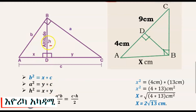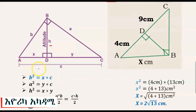The altitude H squared equals x times y. We also use the area of triangle ABC: one-half base times height, which equals one-half times the hypotenuse C times the altitude H. In our case, the leg AB equals x, and B squared equals x times C.